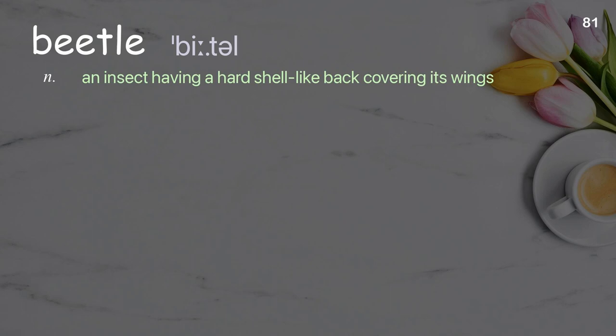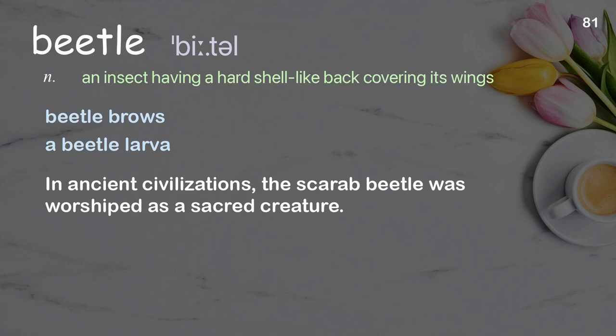Beetle: An insect having a hard shell-like back covering its wings. Examples: a beetle larva. In ancient civilizations, the scarab beetle was worshipped as a sacred creature.